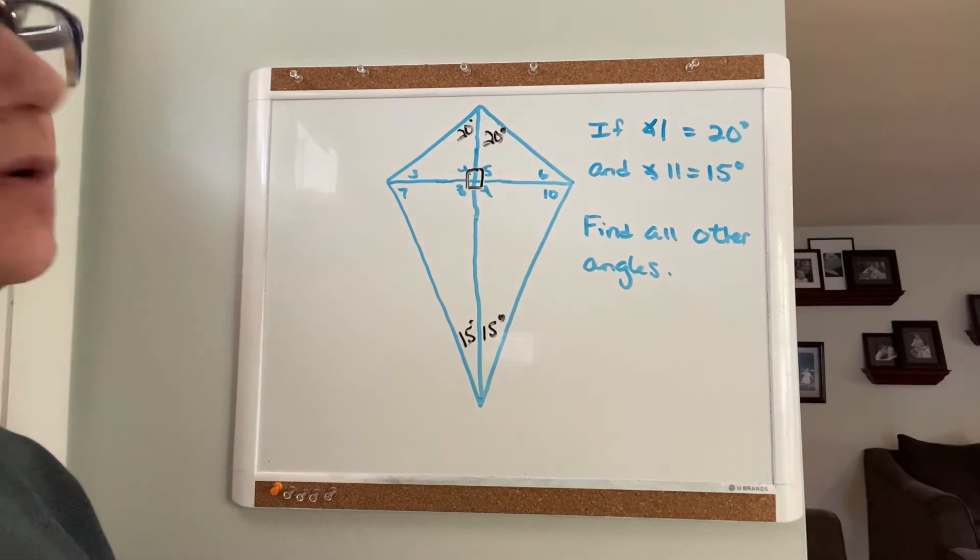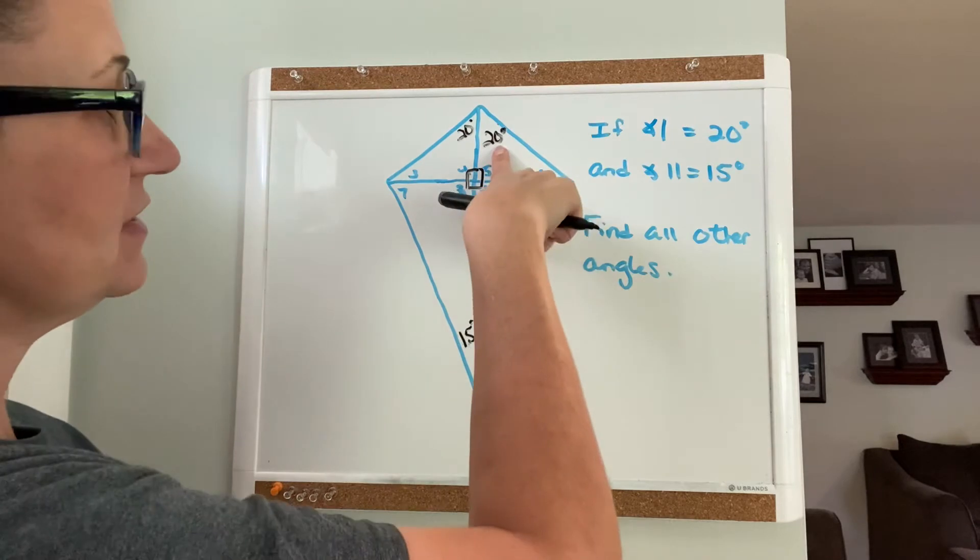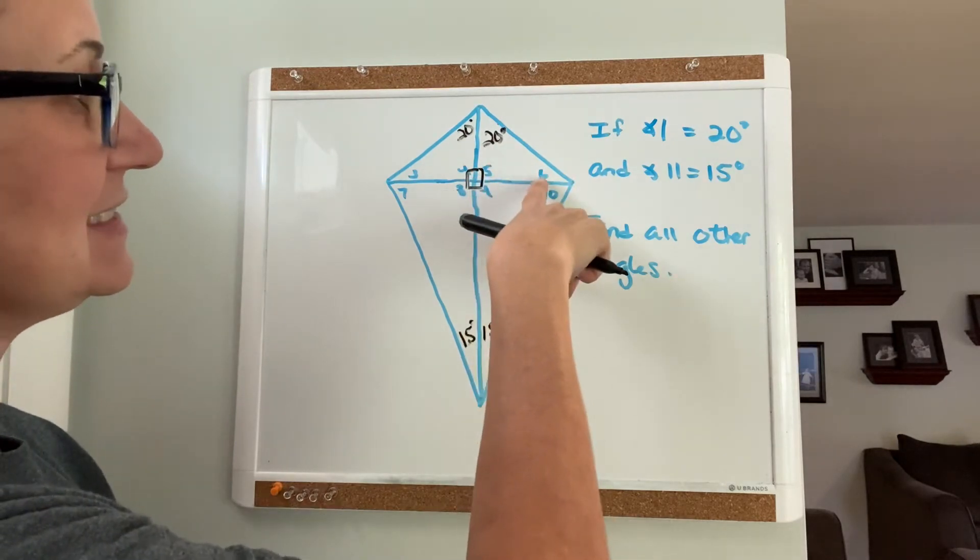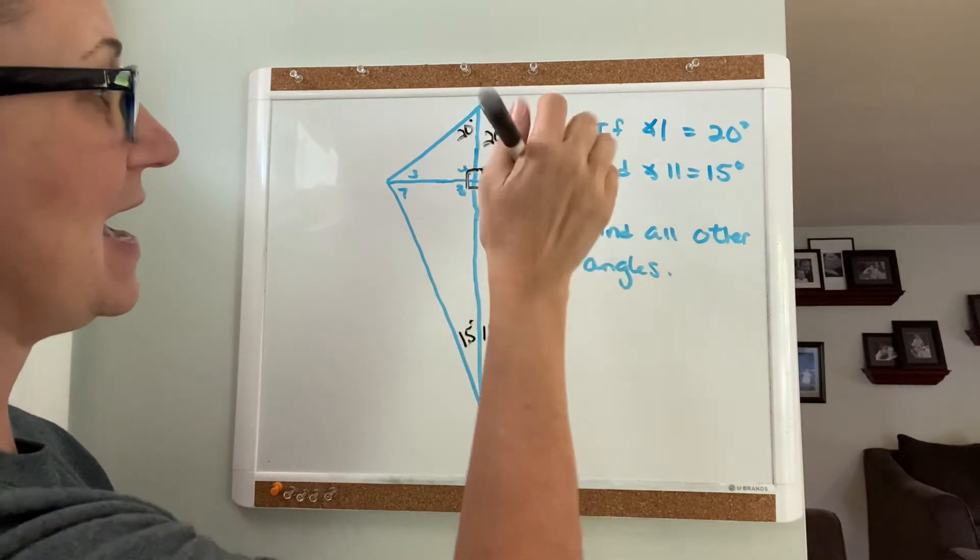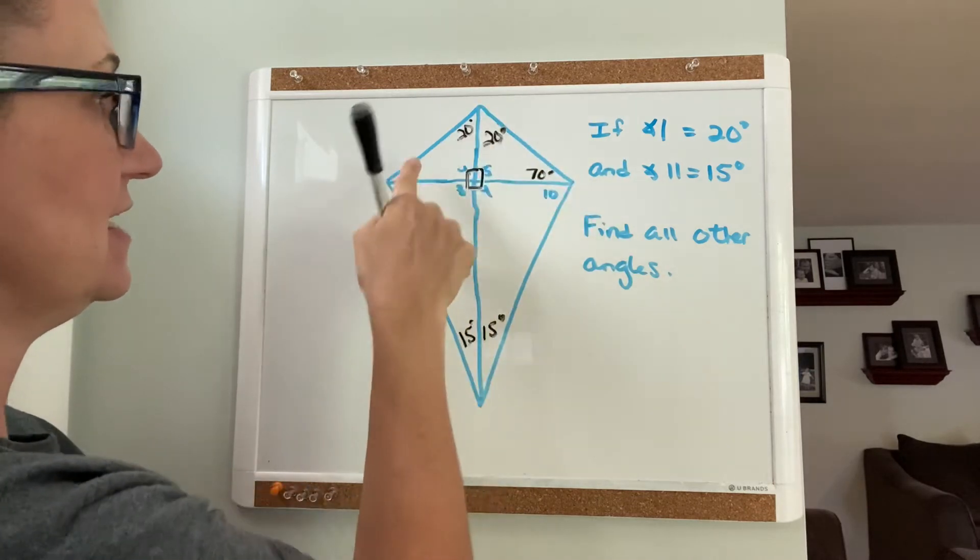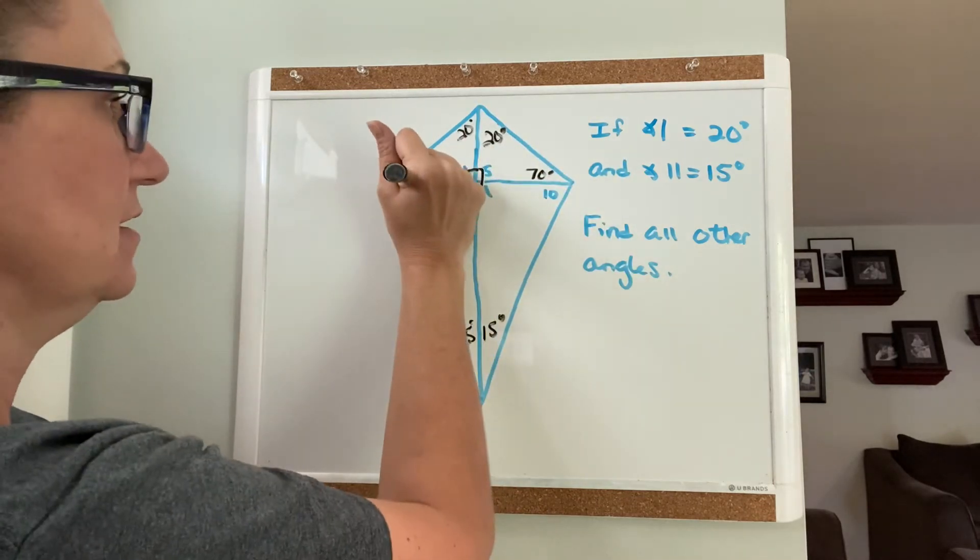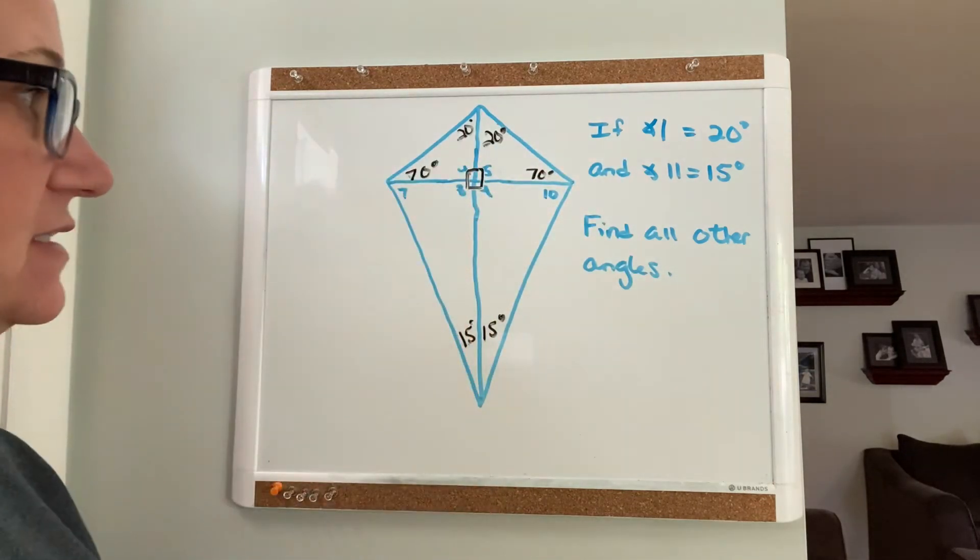Every triangle contains 180 degrees. So if this angle is 20 and this is 90, then angle 6 has to be 70 degrees, and the same is true for angle 3, which has to be 70 degrees as well.